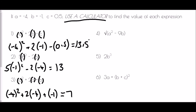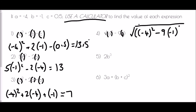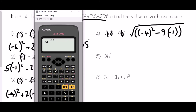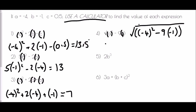For question 4, exactly the same — place brackets around each value for a and b to confirm we type the right thing into the calculator. We have square root, then in brackets: bracket negative 4 close bracket squared, take away 9 lots of bracket negative 1 close bracket. We take the square root of all of this. Typing that into the calculator gives a nice answer of 5.